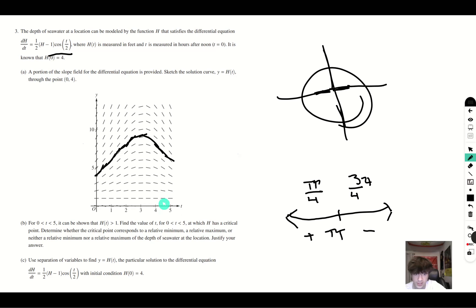So relative maximum, relative maximum at t equals pi. There we go. That is our answer for B.